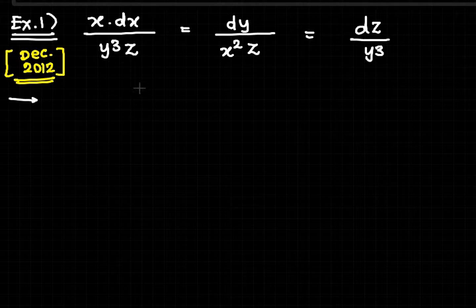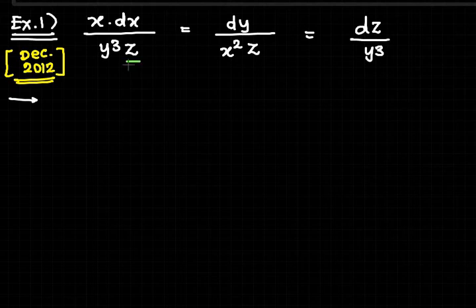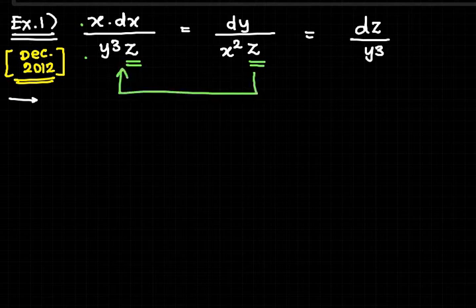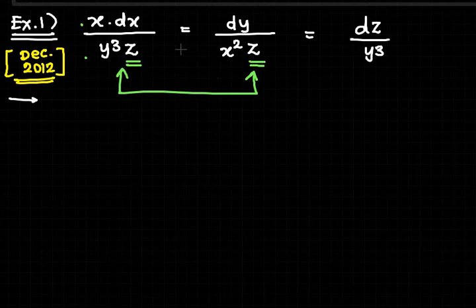Observing the differential equation: the first ratio contains variables z, x, and y; the second ratio also contains z. If we equate the first and third ratios, z can be eliminated from the denominators and we can convert these two ratios into variable separable form quite easily.